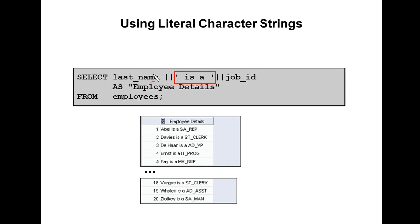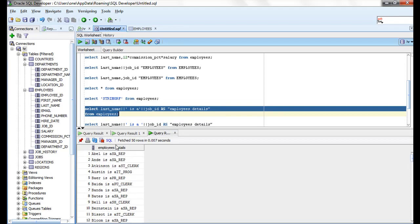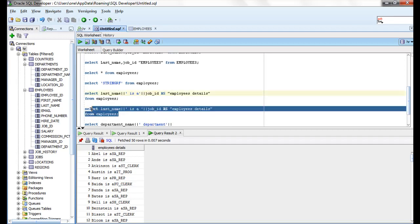In this example, they're concatenating last_name and job_id to display something like 'Abel is a Sales Representative'. They use the concatenation operator with a literal string and an alias name: SELECT last_name || ' is a ' || job_id AS employees FROM employees. When run, it shows 'Abel is a Sales Representative'. Initially there was no space, but after adding the space in the literal string, it displays correctly.